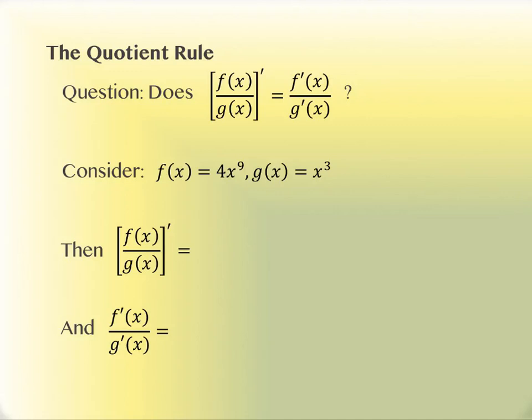The quotient rule — the question to ask ourselves is just like we asked with the product rule: can I just take the derivative of the top and the derivative of the denominator separately? We're going to do an example showing that that's not going to work. The question is: is the derivative of f(x)/g(x) equal to f′(x)/g′(x)? The example we're going to look at is f(x) = 4x⁹ and g(x) = x³.